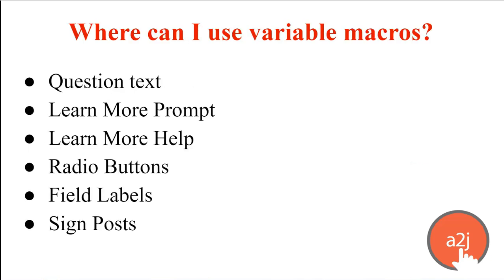So where can you use a variable macro? You can use them in the question text itself, within learn mores — both in the prompt, that's the question the user avatar thinks, and the help, which is the reply the guide avatar gives. You can use them in radio buttons and field labels, and in signposts.